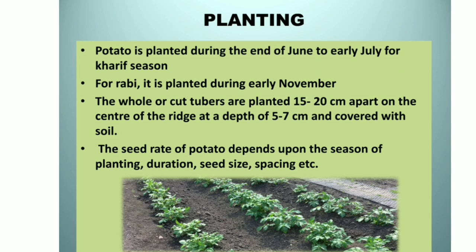Planting: potato is planted during the end of June to early July for the Kharif season, and for the Rabi season it is planted during early November. The whole or cut tubers are planted 15 to 20 cm apart on the center of the ridge at a depth of 5 to 7 cm and are covered with soil. The seed rate of potato depends upon the season of planting, duration, seed size, spacing, and many more factors.